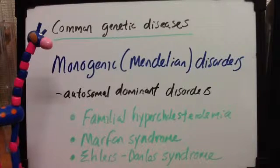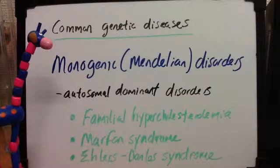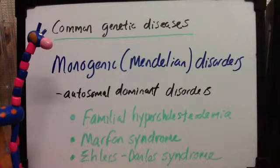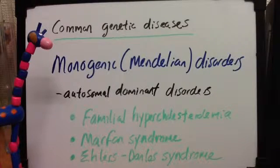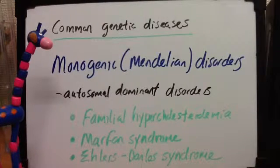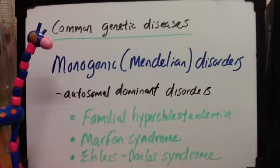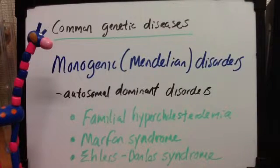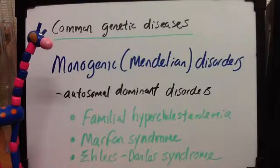Moving on to ocular changes, there would be a dislocation or subluxation of the lens and weakness of the suspensory ligaments. For the cardiovascular system, there would be a fragmentation of elastic fibers in the tunica media of the aorta, aneurysmal dilation, aortic dissection, and rupture in 35 to 40% of patients. There is also an incompetence of the aortic valve with dilation, and tricuspid and/or mitral valve floppiness — a floppy valve.